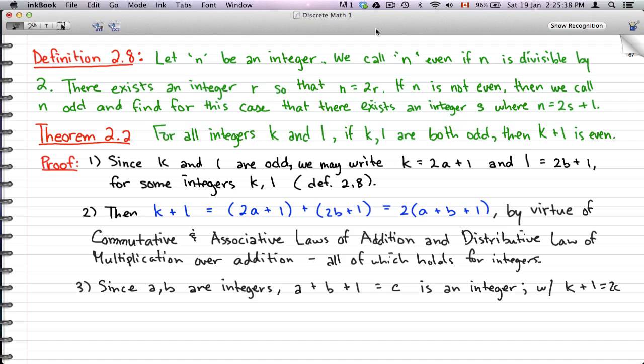Or the plus 1 is what makes the whole thing odd. So 2s plus 1 is what makes n odd, or not even.